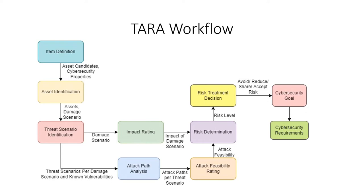This is the TARA workflow. In the beginning we have an item. An item is a high-level scope statement or high-level definition of the work which is in scope. An item is a system, system of systems, subsystem, or simply a function or a feature. First of all, we need to define the item definition.